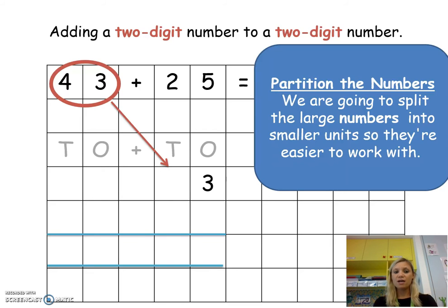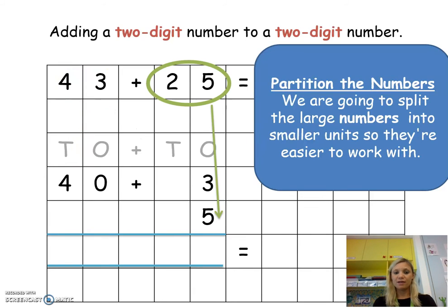First we're going to look at 43. We can see that it's got 3 ones which goes into the ones column heading, and it's got 4 tens which represents 40. We're going to do the same with the number 25. It's got 5 ones and 2 tens which is 20.